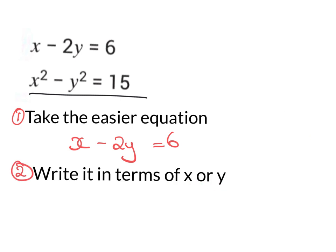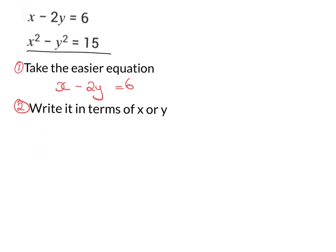Step two is write it in terms of x or y. So I say x or y because there's x's and y's in this question. If there was a's or b's, c's or d's, whatever the case would be, you'd be writing it in terms of that. So what does write in terms of x or y mean? It means I want x on one side, everything else on the other, or I want y on one side, everything else on the other.